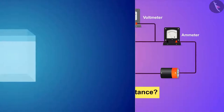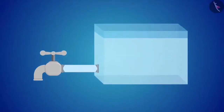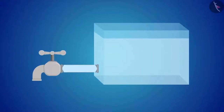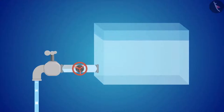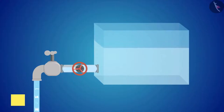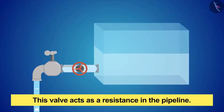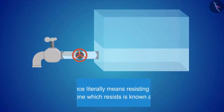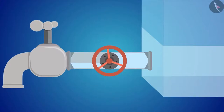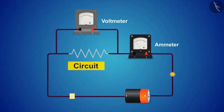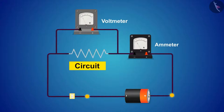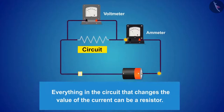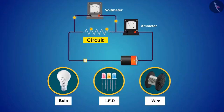What is this resistance? Do you remember the water tank analogy? If a valve is placed in a pipeline which controls the amount of water flowing towards the tap, then this valve acts as resistance in the pipeline. Resistance literally means resisting anything — here the valve resists water and controls its flow. If this valve is replaced with a resistor in the circuit, the resistor will increase or decrease the current in the circuit. Everything in the circuit that changes the value of the current can be a resistor — bulbs, LEDs, or any special kind of wire can be a resistor.